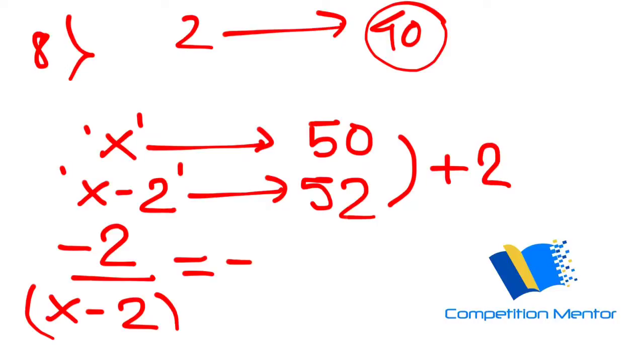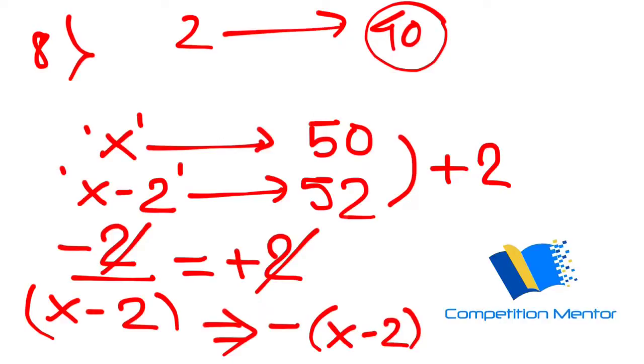by 2, right? Plus 2. So plus 2 happened here. It's very important to consider, because otherwise when you cancel, you have to take this minus under consideration. So what you are getting: minus (x minus 2). Right, this is